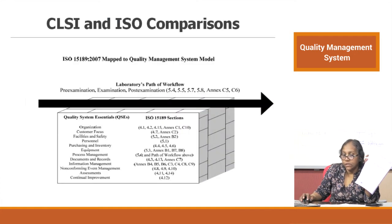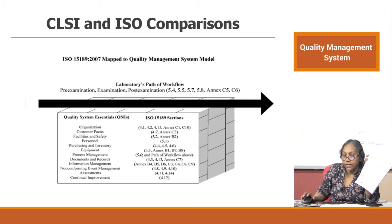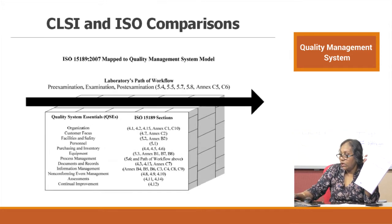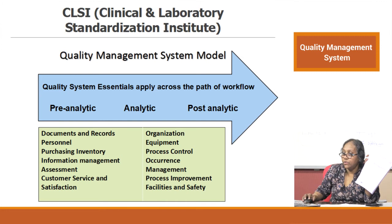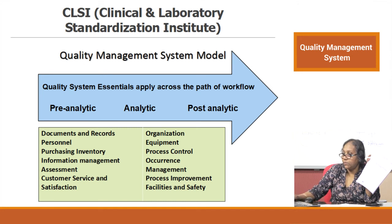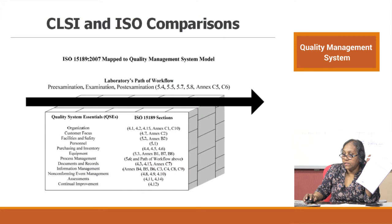The ISO components are called the quality system essentials, and in ISO 15189 the sections are divided into management and technical requirements. Looking back at the earlier slide, the sample path represents the technical requirement and the surrounding elements are management requirements — it is the same thing depicted in a different way.